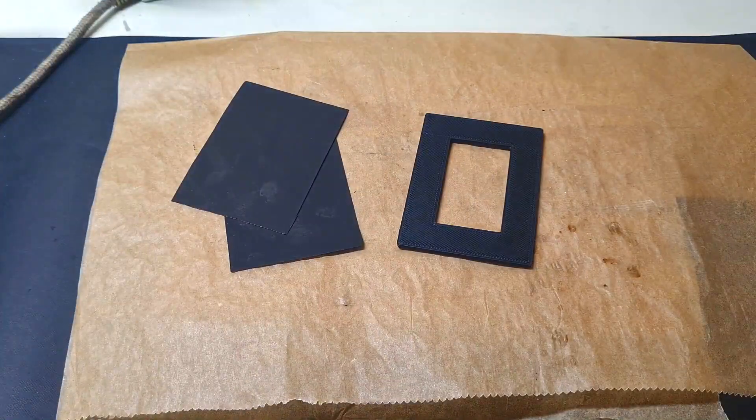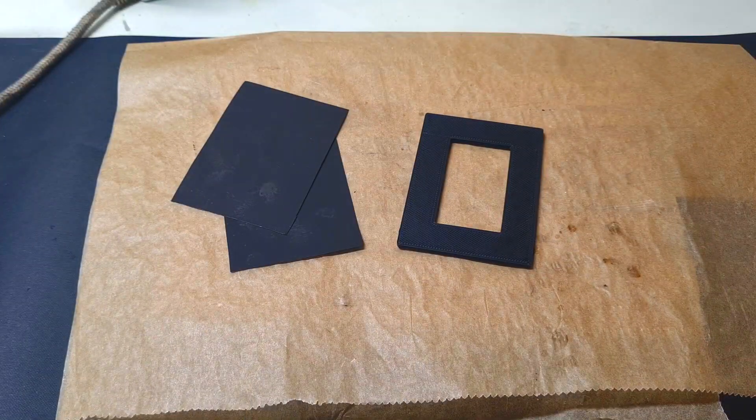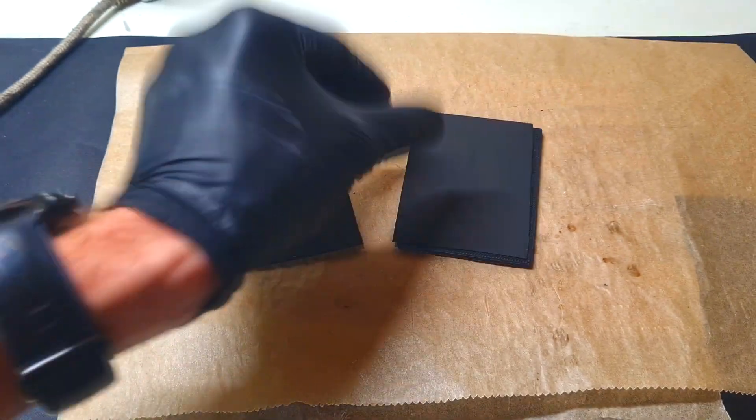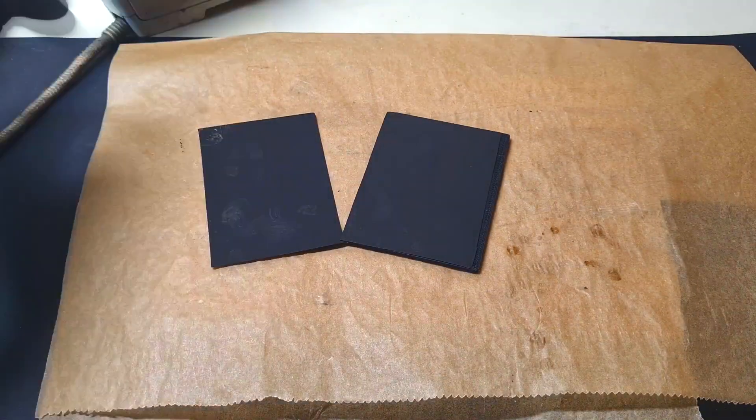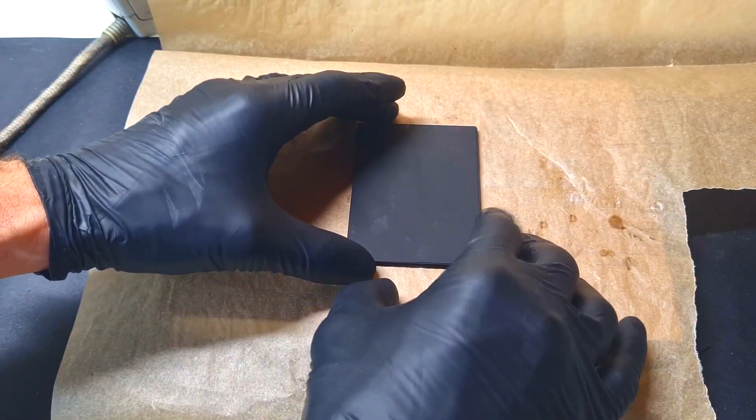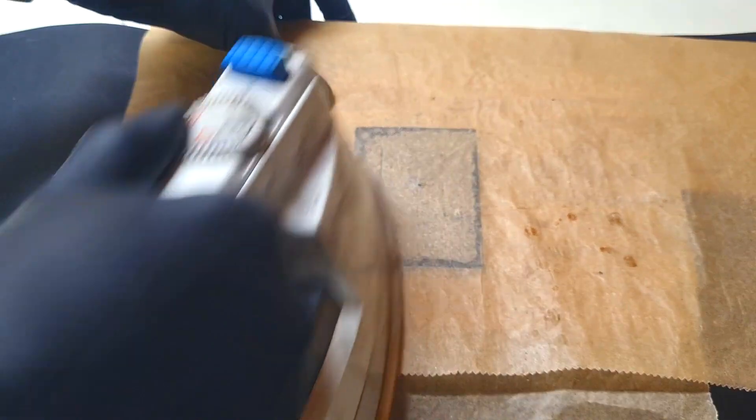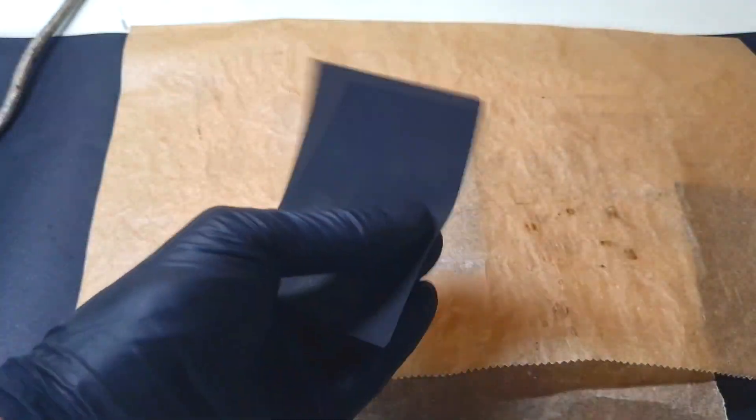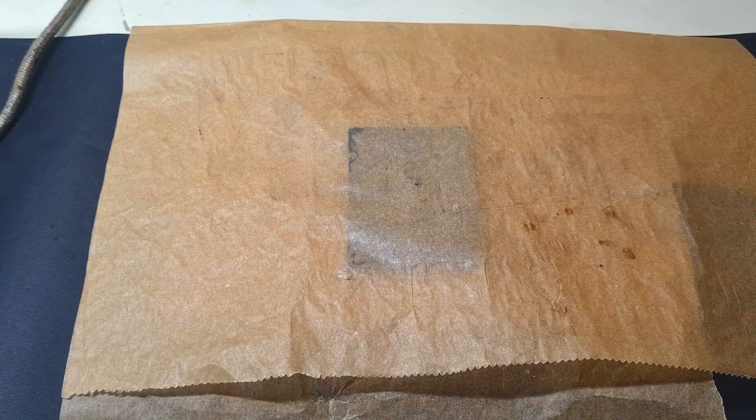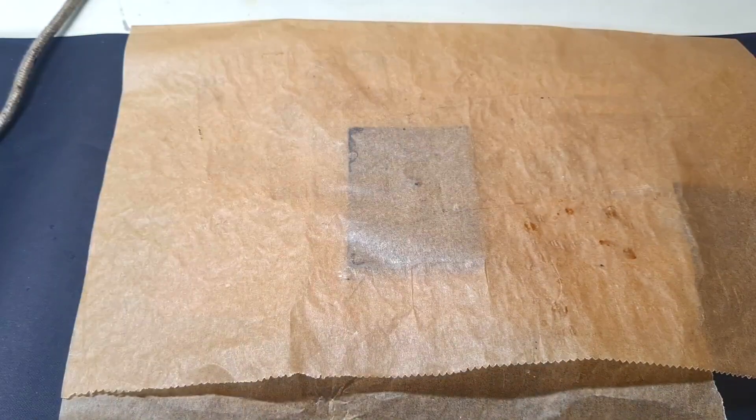And the way which I will make this cell will be the same like I do with this one, which means that I will weld this conductive HDPE on this 3D printed frame with some iron. This will be enough. But actually I can also glue this conductive HDPE on this plastic frame, but this way with the iron is a little bit more faster.